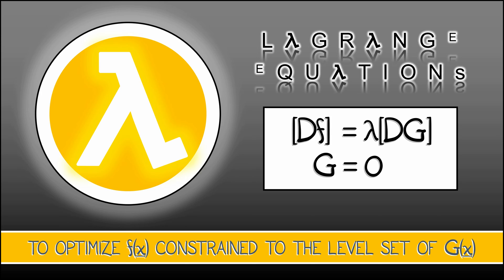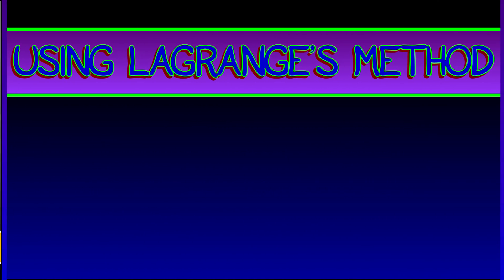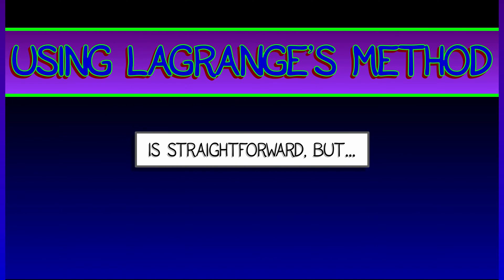You're trying to optimize a function f constrained to the level set where g equals zero. Now, we're going to use Lagrange's method. It's not going to be so bad. It's pretty automatic. That's what's nice about it.